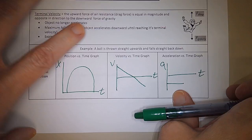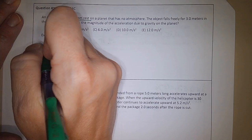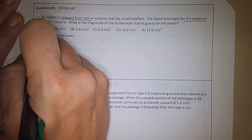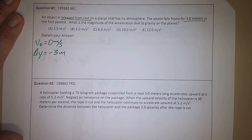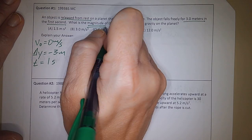Alright, so let's do a couple of sample problems here. Okay, so an object is released from rest, so that means my v initial is zero, on a planet that has no atmosphere, so there's no air resistance. The object falls freely for three meters, so my delta y is negative three meters because it's falling down, its displacement is negative. In the first second, so my time is one second. What is the magnitude of the acceleration due to gravity on this planet? So I'm looking for a.